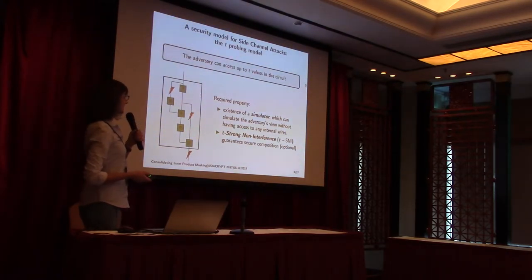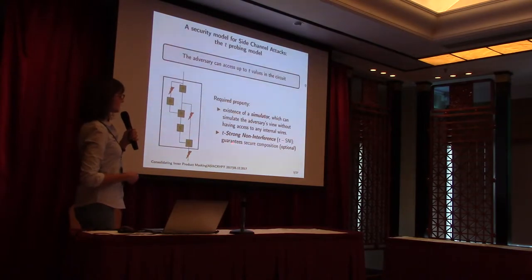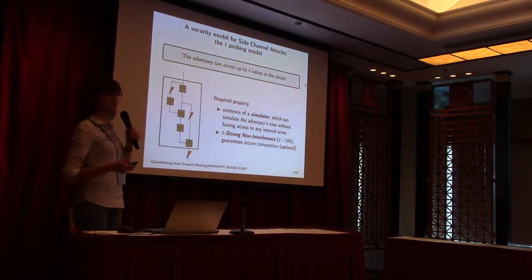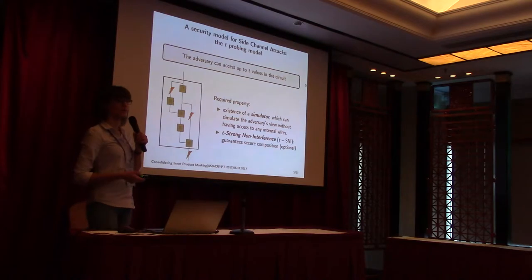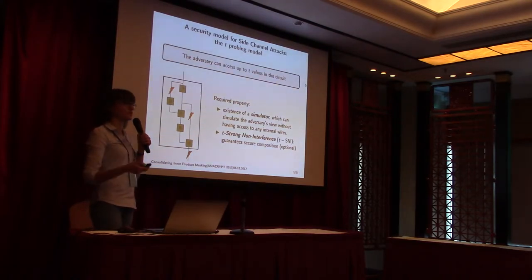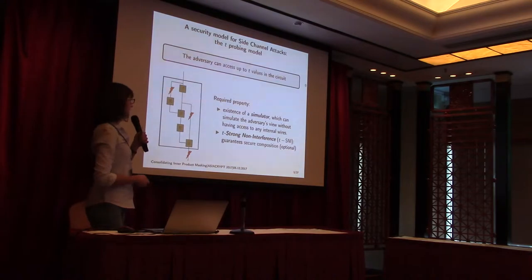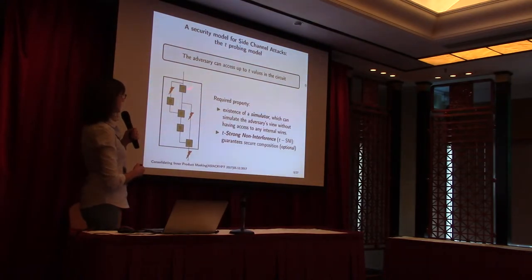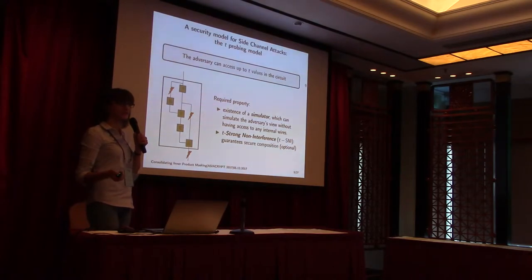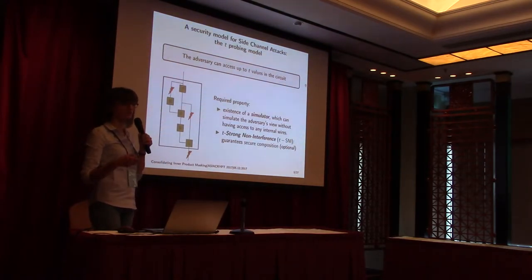In order to guarantee privacy in the T-probing model, we have to guarantee the existence of a simulator which can simulate the adversary's view without actually knowing the secret. A stronger property is T-strong non-interference (TSNI), which guarantees composability between gadgets — so if the output of one gadget is the input of another, this can always be securely composed if both gadgets are TSNI.